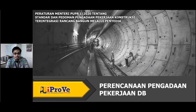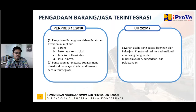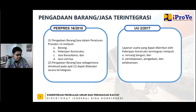Sebelum kita masuk ke perencanaan pengadaan, kita coba samakan dulu persepsi terkait dengan pengadaan barang dan jasa terintegrasi. Sebagaimana kita ketahui, di dalam Peraturan Presiden Nomor 16 Tahun 2018, kita sudah menemukan frasa terintegrasi. Di dalam Pasal 3 ayat 1 dituliskan bahwa pengadaan barang atau jasa meliputi: barang, pekerjaan konstruksi, jasa konsultasi, dan jasa lainnya. Di ayat 2-nya disampaikan bahwa pengadaan barang dan jasa tersebut dapat dilakukan secara terintegrasi.